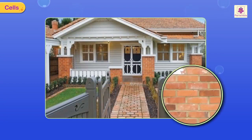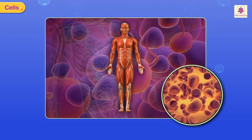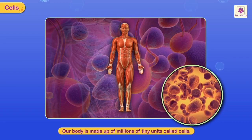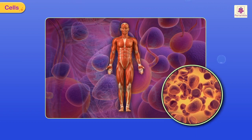Cells to organ system — look at this house; it is made up of a number of bricks. Similarly, our body is made up of millions of tiny units called cells. All living things are made up of cells.